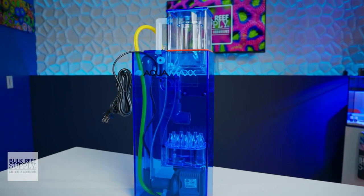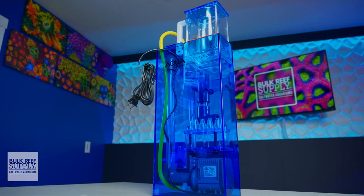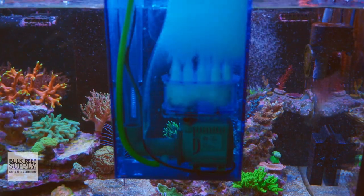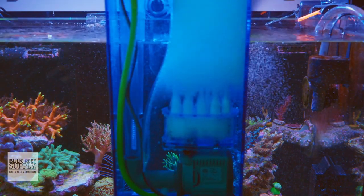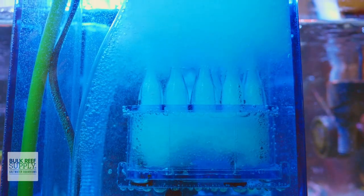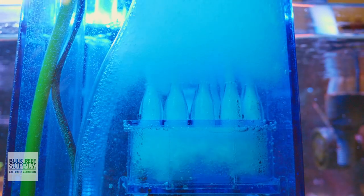The HOB 1.5 from Aquamax is an effective hang on skimmer that's well rated by the reefers that use them. They're compact, quiet, easy to use and do a great job of hauling out waste. They're also an excellent way to get the other benefits that skimmers provide like gas exchange and even a nice pH bump, especially if you hook up that air silencer to a CO2 scrubber.